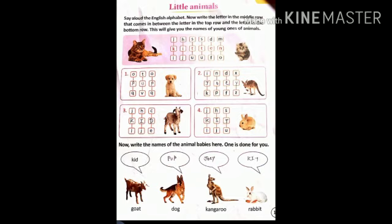Now, children at the same page, page number 11. Write the names of the animal babies here. One is done for you. Children, you can see at the bottom some pictures of the animals are given. We have to write the young ones of the given animals. First one is already done for you. The young one of goat is KID, K-I-D.